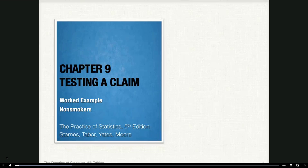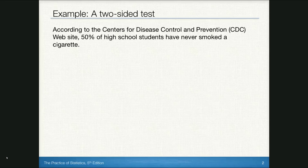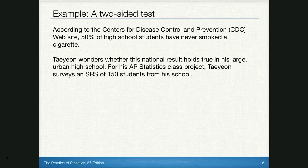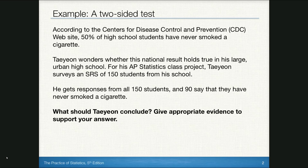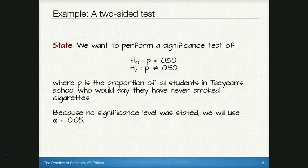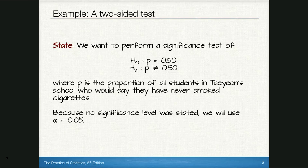Let's go through a two-sided example. According to the CDC, 50% of high school students have never smoked a cigarette. Taeyeon wonders whether this holds true in his large urban high school. He surveys an SRS of 150 students, and 90 say they have never smoked. For the State step: null hypothesis p = 0.50, alternative p ≠ 0.50 — this is two-sided because we're testing if the proportion differs, not just if it's higher or lower. p is the proportion of all students at Taeyeon's school who would say they've never smoked. No significance level was stated, so we use alpha = 0.05.